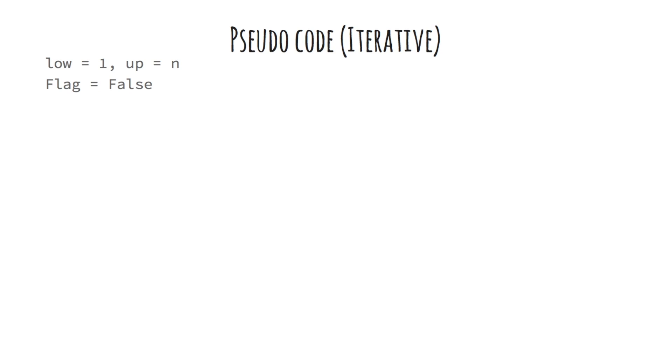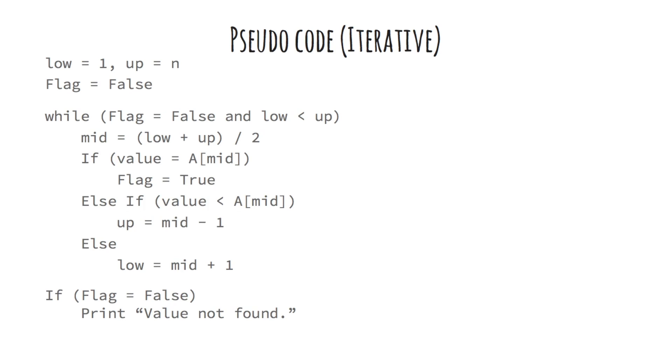Here I have written the pseudocode for the iterative version of binary search. Value is the item to be searched for and a is the data collection of size n. First we initialize lower limit low equal to 1 and upper limit up equal to n and a flag equal to false. Then we iterate over the data while the flag is false and lower limit is less than upper limit. We check if the middle element is equal to the value. If yes, we set the flag equal to true and return the location. Otherwise we iterate over the lower or upper half depending on the value.